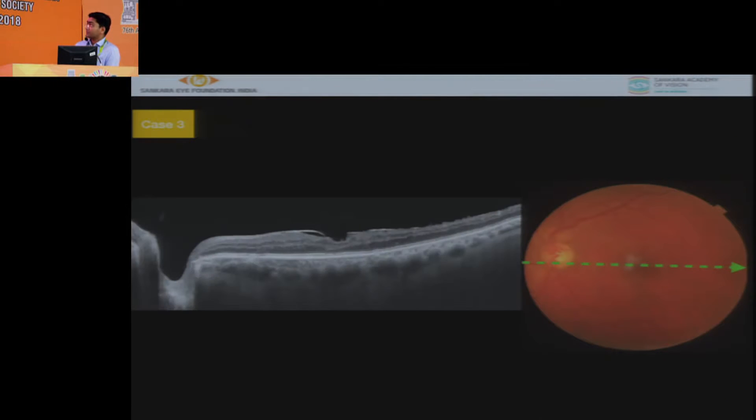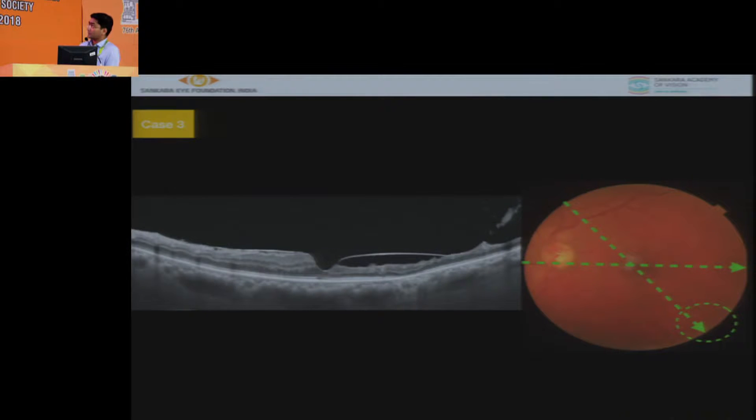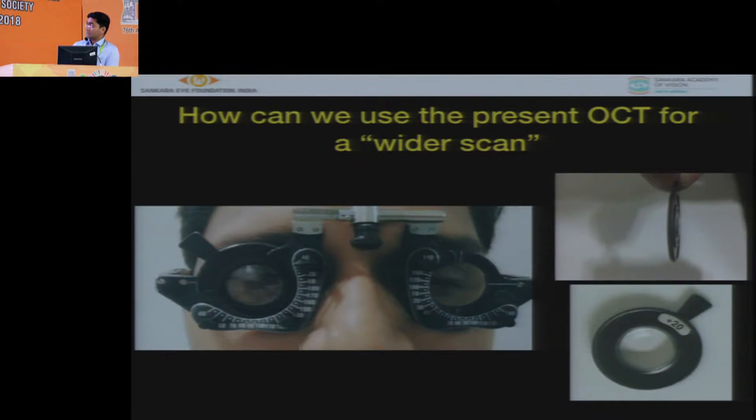As you can see over here, the first scan is showing there is some thinning so probably there is an inferotemporal vein occlusion that is causing that and that has been confirmed over here but what I can see over here there is some elevated NVEs over there. But still I don't know. So whether we can utilize the present scan to do a wider OCT? Yes.